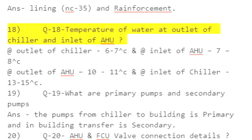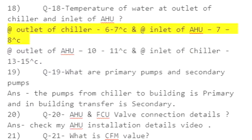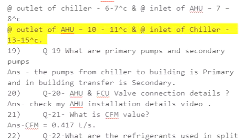Q18: Temperature of water at outlet of chiller and inlet of AHU — at outlet of chiller: 6 to 7°C. At inlet of AHU: 7 to 8°C. At outlet of AHU: 10 to 11°C. At inlet of chiller: 13 to 15°C.